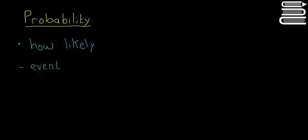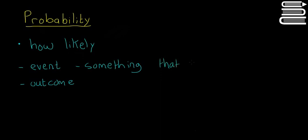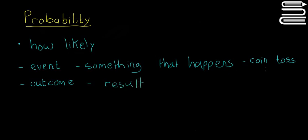We also have to look at two words — event and outcome — that are going to be used quite a lot. An event is basically just something that happens. It's as simple as that. An example of an event would be flipping a coin. The outcome is basically the result of that thing, so for a coin toss the outcome will be either heads or tails.